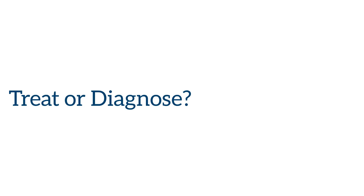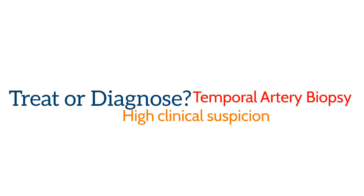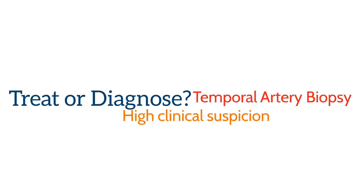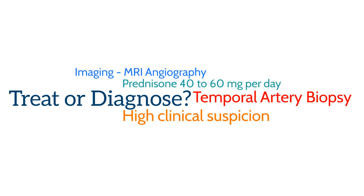Normally, the first step in managing any disease is to first diagnose it before treatment. However, giant cell arteritis carries such drastic consequences if not treated in time, that if there is a high clinical suspicion for giant cell arteritis, corticosteroids should be started prior to any confirmatory testing. The starting dose of prednisone is usually 40 to 60 mg per day for generally 2 to 4 weeks, based on symptoms and repeat lab testing.